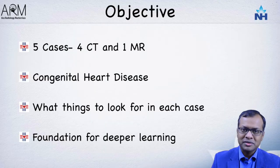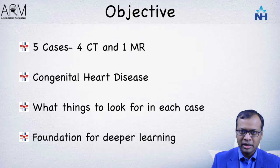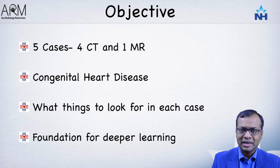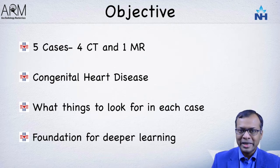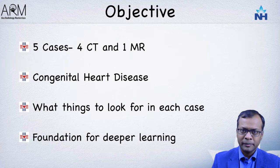My objectives are very clear. I'm going to show you five cases: four cases in CT and one case in MRI. I want to show you a stepwise manner of assessing congenital heart disease on cross-sectional imaging, make you acquainted to common pathologies, and lay a foundation for deeper learning. So let's get started.